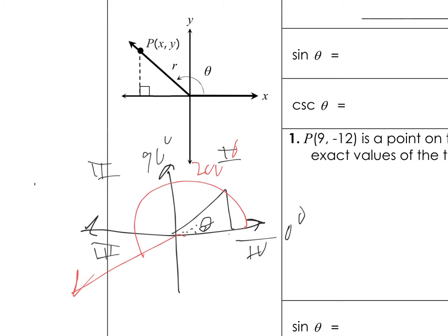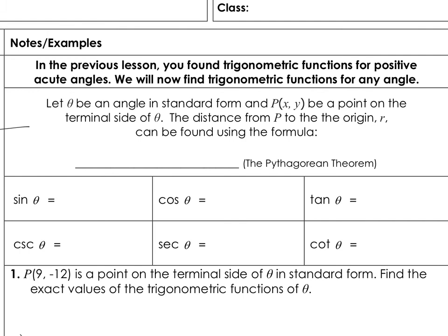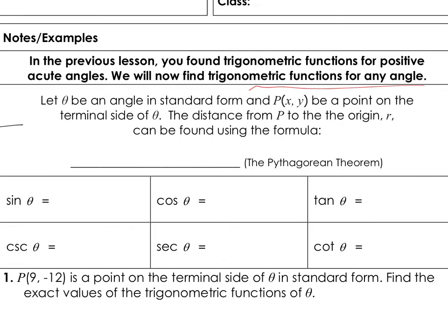In the previous lesson, you found trigonometric functions for positive acute angles. Of course they were all acute — you can't have an obtuse angle in a right triangle. So every angle we were dealing with was acute. Now we'll find trigonometric functions for any angle.